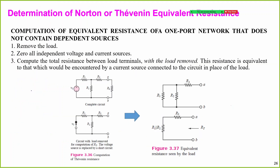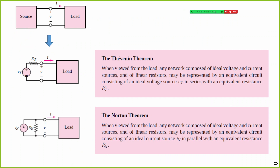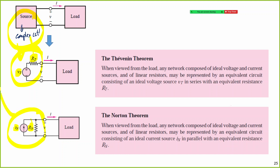To determine the Thevenin or Norton equivalent, we need to find two values: the Thevenin voltage Vth and the Thevenin resistance Rth (which equals the Norton resistance Rn). Once we have these, any complex circuit can be substituted by one source and one resistance. The topic we will discuss is how to compute Vth and Rth from a given circuit, and similarly how to find Rn and In for the Norton equivalent.